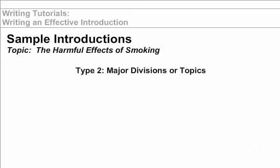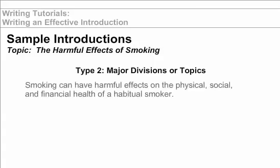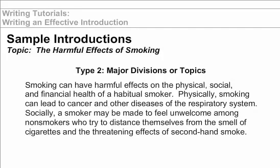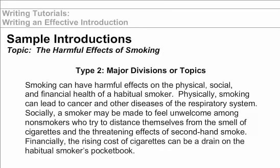Type 2: State the major divisions or main ideas of your paper. Smoking can have harmful effects on the physical, social, and financial health of a habitual smoker. Physically, smoking can lead to cancer and other diseases of the respiratory system. Socially, a smoker may be made to feel unwelcome among nonsmokers who try to distance themselves from the smell of cigarettes and the threatening effects of secondhand smoke. Financially, the rising cost of cigarettes can be a drain on the habitual smoker's pocketbook. The writer establishes three main ideas that she will pursue in the body of her essay.